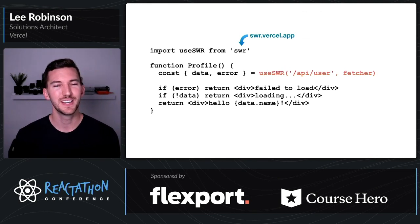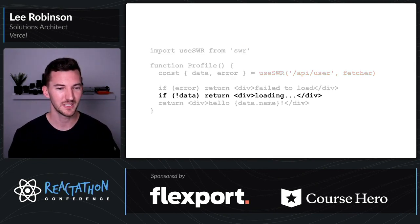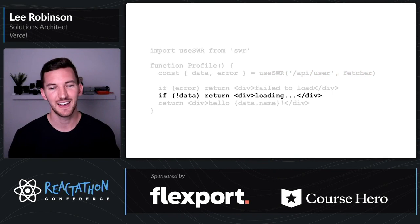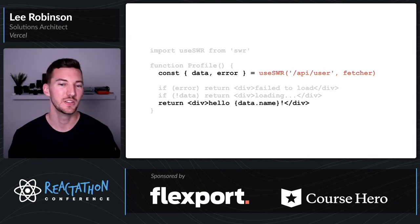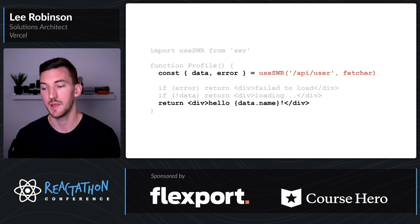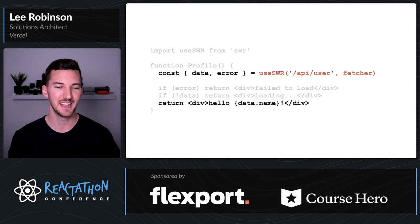This is using a handy library that Vercel has made called SWR, a React hook library for data fetching. We render a loading state that's pre-rendered from the server, and then on the client side we use SWR to talk to an API route or an external API — whether that's a REST API, GraphQL, or whatever you want — and then it returns that data and shows the name on the profile.